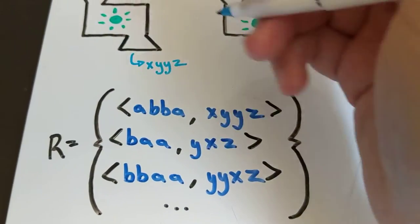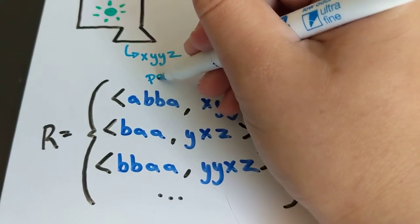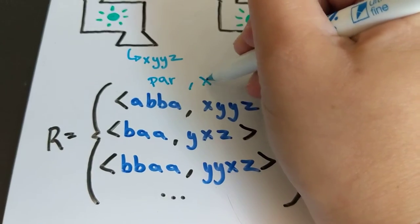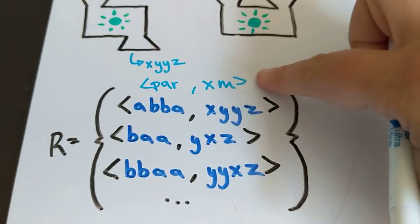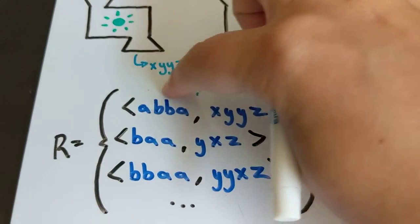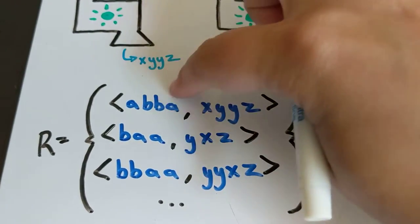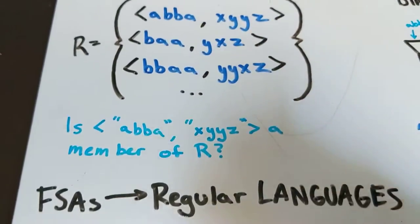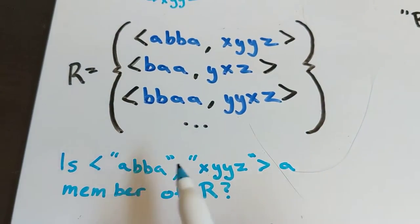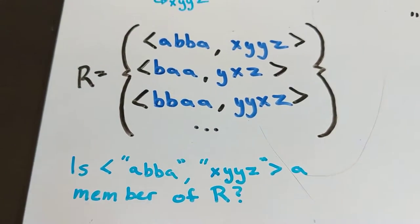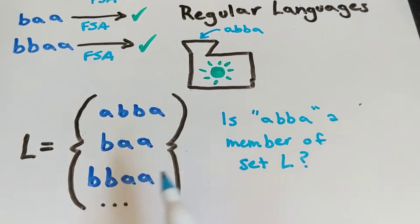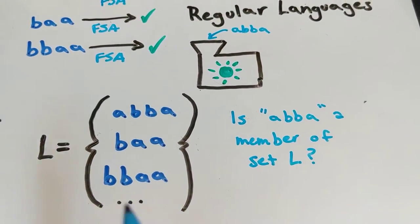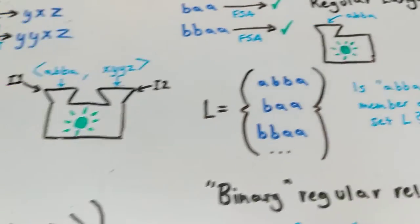If it is not a member of this set, if you feed it PQR and XM for example it will return no this is not a member of your relation. We ask the question is ABBA XYYZ a member of R, just like we asked is ABBA a member of set L up here when we were trying to identify languages.